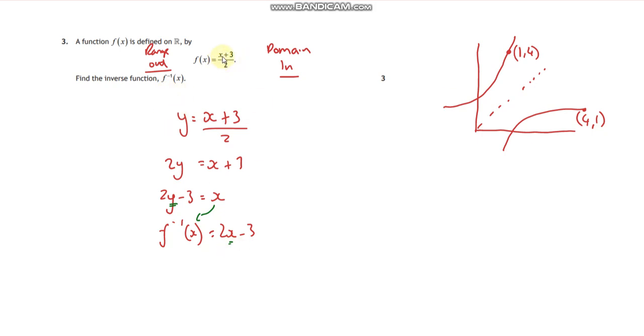So say for example, if I put 1 into here, 1+3 is 4, 4 divided by 2 is 2. So up there, if I put in 1, I'm getting out 2.